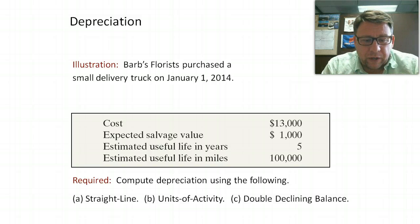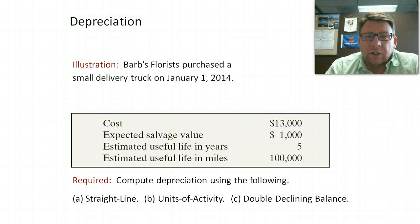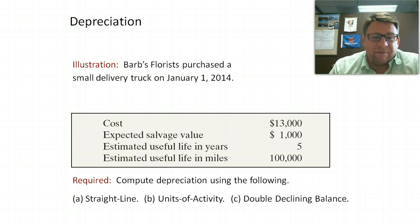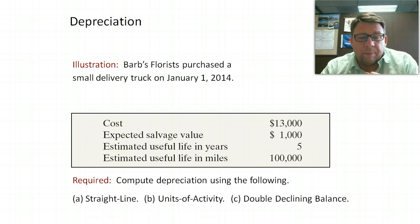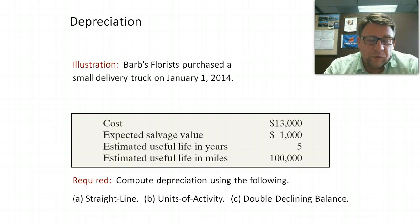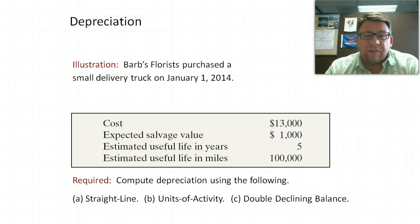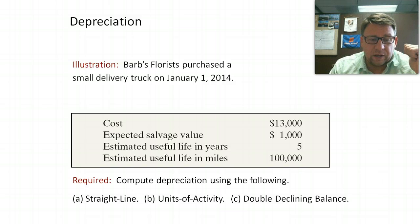Let's look at an example. Barb Florist buys a small delivery truck on January 1st. The cost of the truck is $13,000, it's expected to have a residual or salvage value of $1,000, and the estimated useful life is 5 years — or for units of production, we think it will go 100,000 miles. That's the information we need — cost, residual value, and useful life — to calculate depreciation using straight line, units of production, and double declining balance.